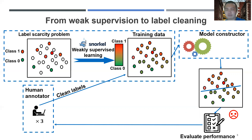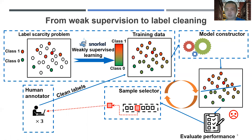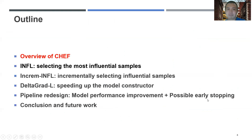For example, here we can have three different human annotators. To further determine which training samples should be cleaned by the human annotators, we typically need one component called the sample selector. After the human annotators clean the labels for the samples identified by the sample selector, we can update the models in the model constructor using the updated training dataset. This label cleaning process can be repeated multiple times until the model performance is good enough, and it has been used in many applications, but we found it can be further improved by using our solution SHIFT.